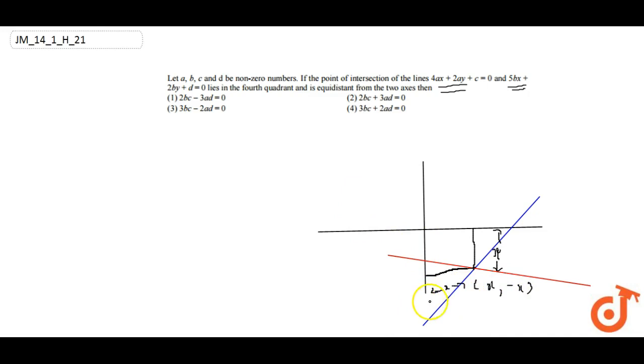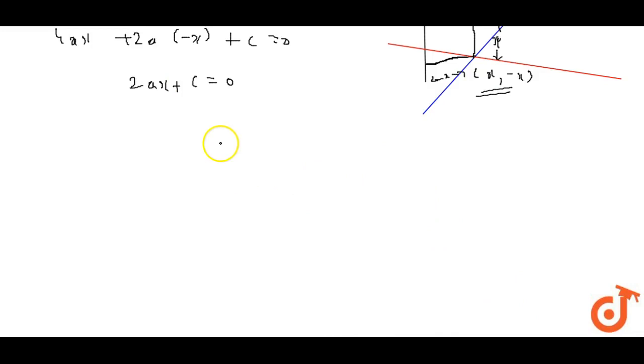So the point is x comma minus x because it is fourth quadrant. This point should satisfy both the equations. So coordinates put in this way: 4x plus 2a times minus x plus c equals to 0. 2a gives us 2x plus c equals to 0, and x equals to minus c by 2a.